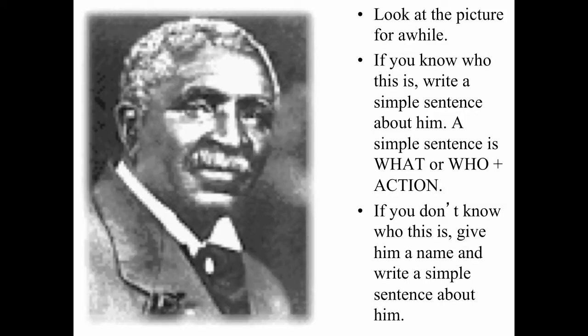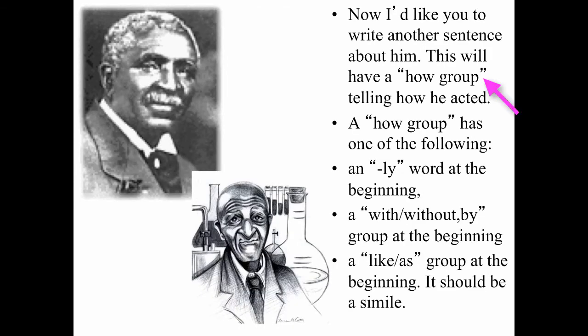Let's start another type of sentence structure. We'll start with a simple sentence about this person. Look at the person, and if you don't know his name, make one up — write a simple sentence: who or what, followed by an action. To spice up that boring sentence, we're going to add a how group. The how group, again, comes at the beginning and tells how the rest of the sentence takes place. You know how you have an action in your sentence? This group of words tells how that action is done.